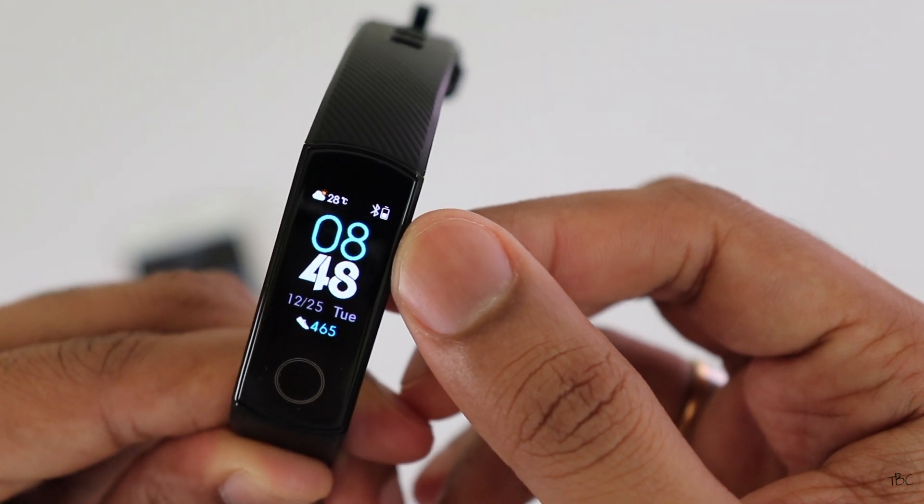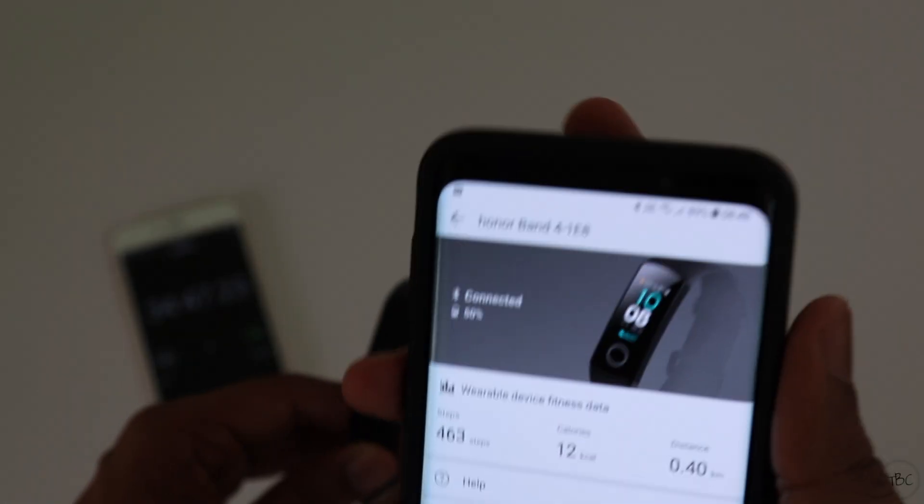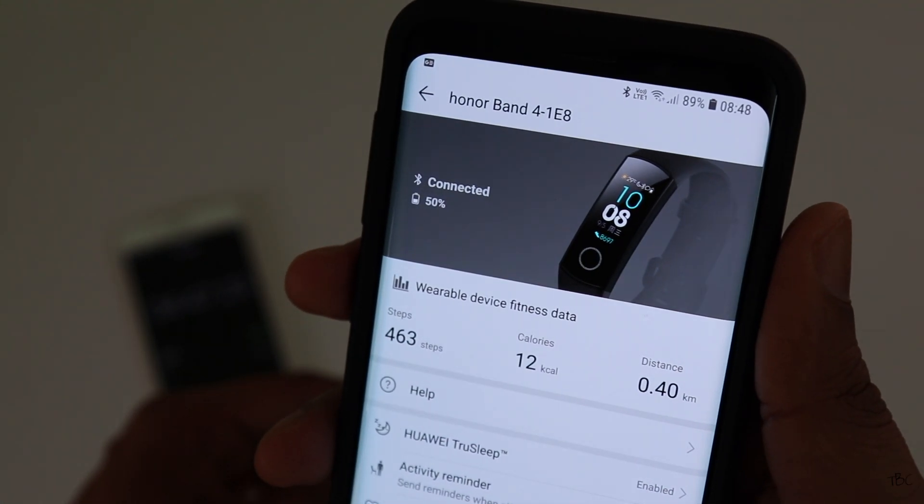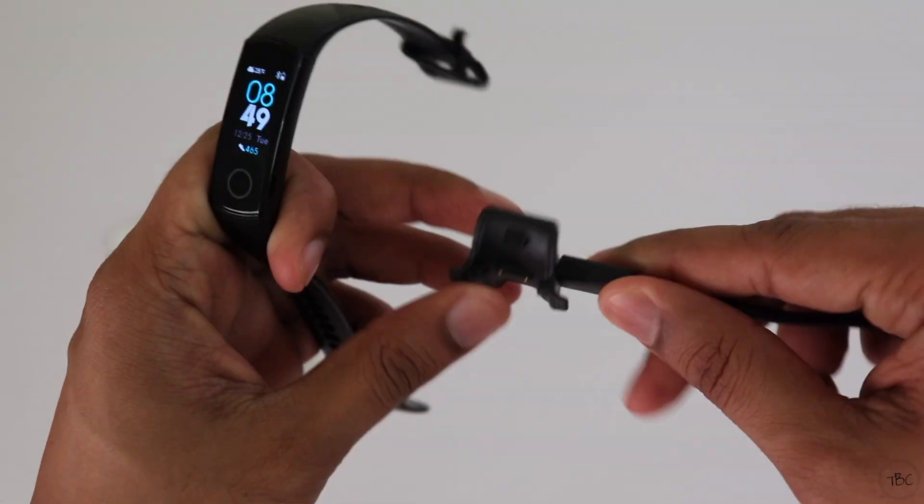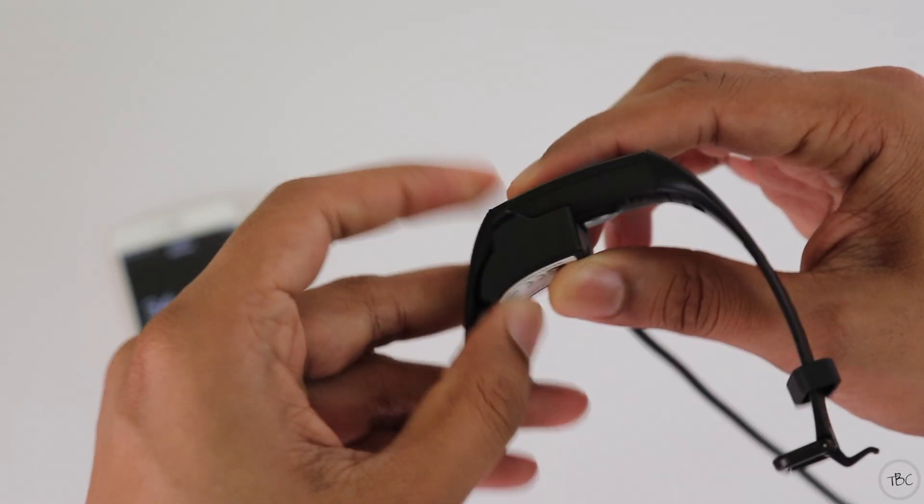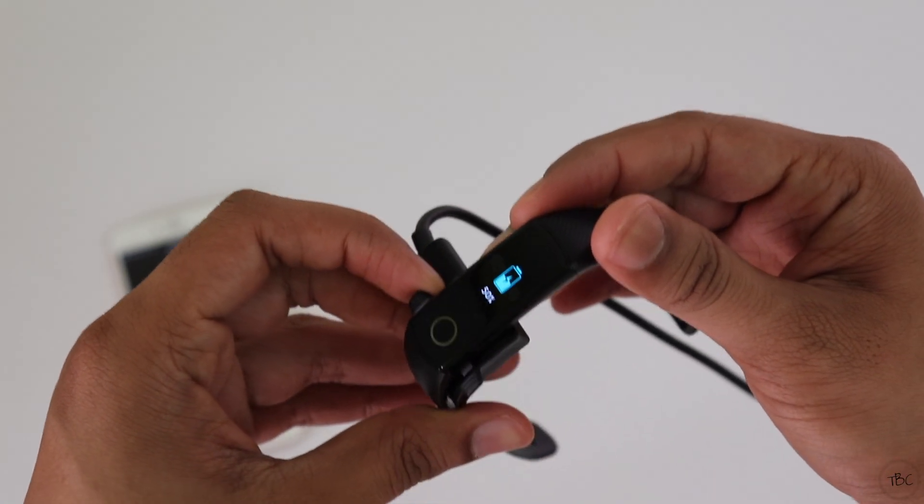As you can see it's still showing the Bluetooth sign. So let me grab my phone and yes it's connected. So till now everything is good. And finally let me connect the charger and yep that's also working. So that's great.